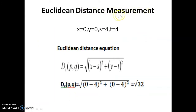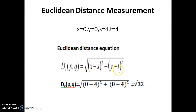Euclidean distance measurement. We know x = 0, y = 0, s = 4, t = 4. The Euclidean distance equation is: D(p, q) = sqrt((x - s)² + (y - t)²). Substituting the values: sqrt((0 - 4)² + (0 - 4)²) = sqrt(16 + 16) = sqrt(32).